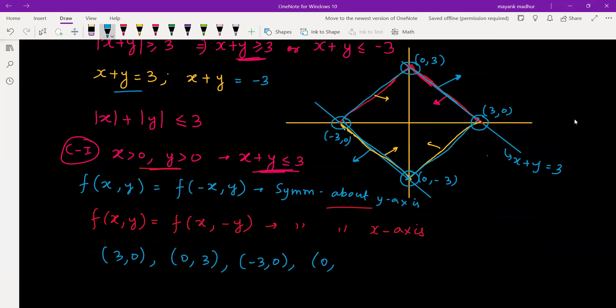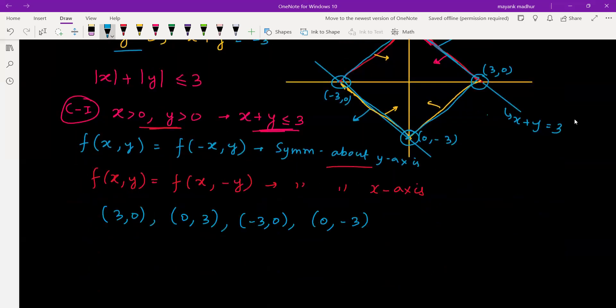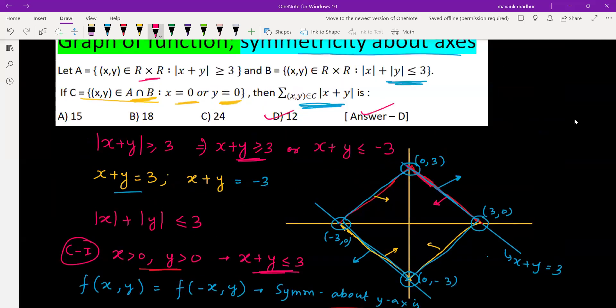These are the values of (x, y), and we need the summation of all those values—the summation of mod of x plus y for all the possibilities. So this will be 3, this will be again 3, this will be again 3 because of modulus. So the answer should be 12. Yes, the answer is D, which is 12.